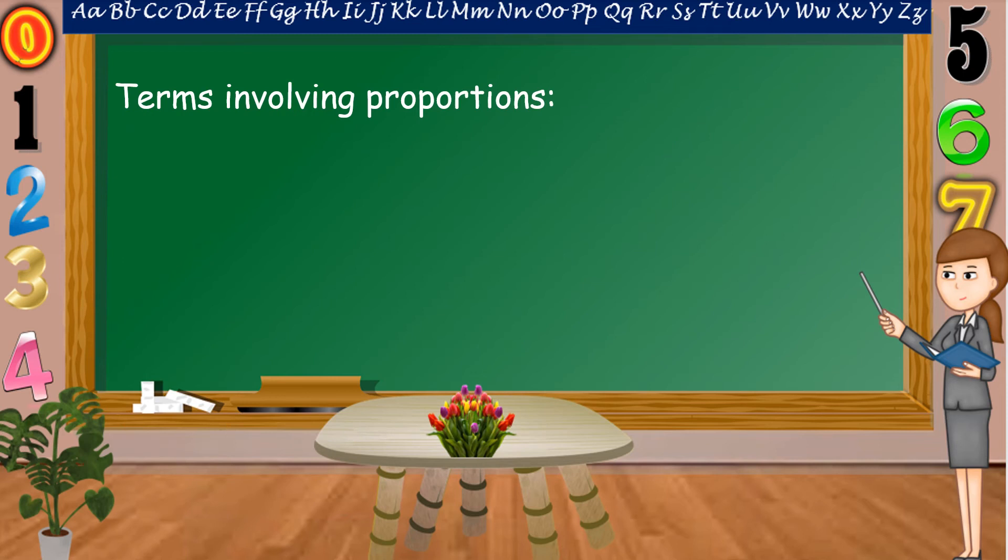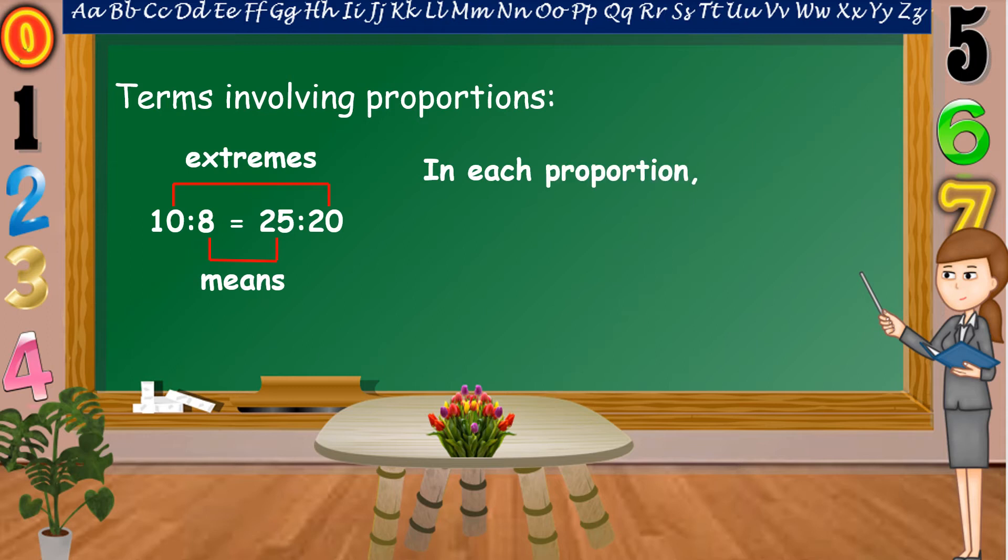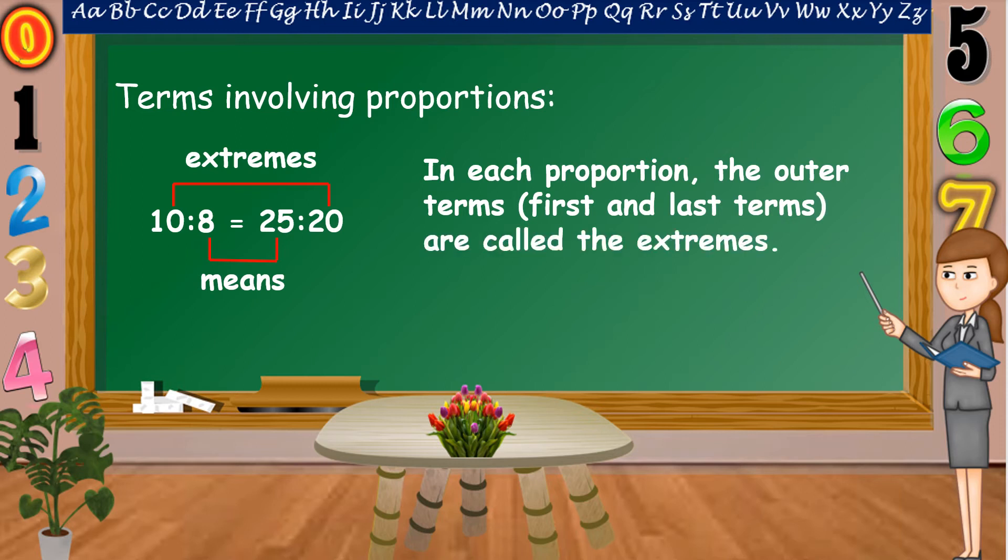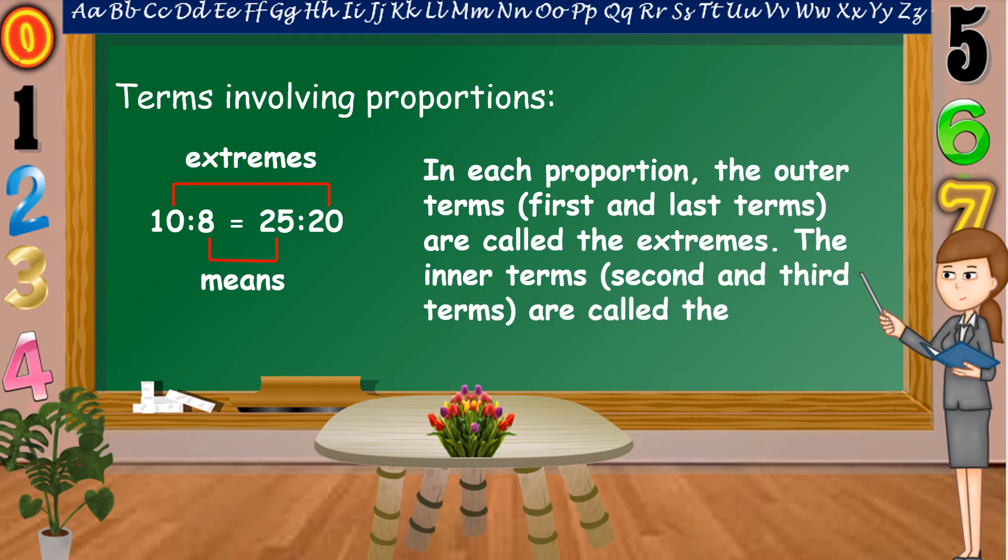Terms involving proportions. 10 is to 8, as 25 is to 20. In each proportion, the outer terms, first and last terms, are called the extremes. The inner terms, 2nd and the 3rd terms, are called the means.